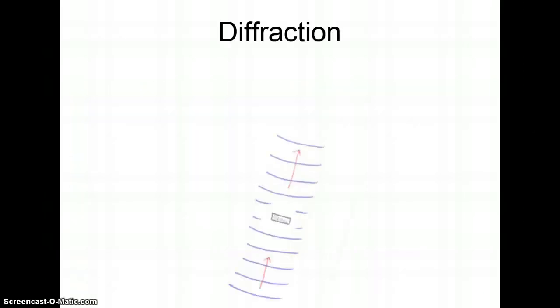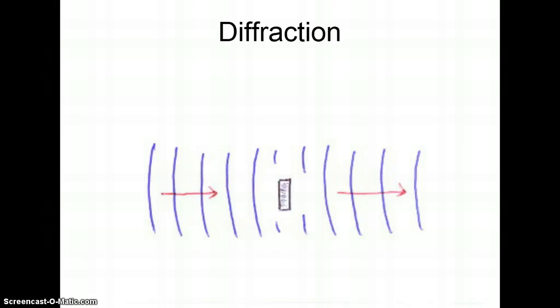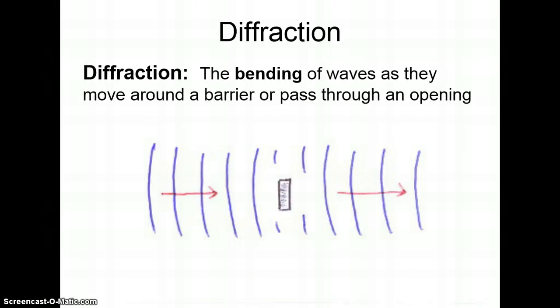Diffraction is the third wave interaction. This is the bending of waves as they move around a barrier or pass through an opening. So as they go through an opening they spread out. They kind of bend. They're in the same medium. They don't change mediums like refraction, but they're in the same medium and they bend.